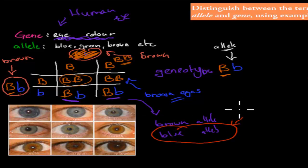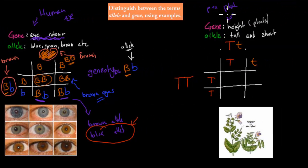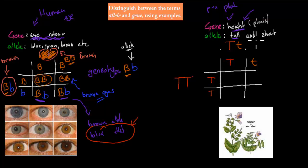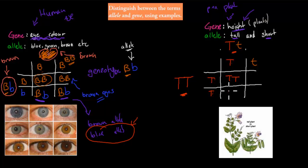The other example was the pea plant. The gene is responsible for height — so the part of the chromosome responsible for height is what we're talking about. The alleles: one was tall and the other was short. If we do the same example and cross one purebreed with a monohybrid breed, we get this T from here and this T from here making a purebreed, and this T with this T from the other making a purebreed.